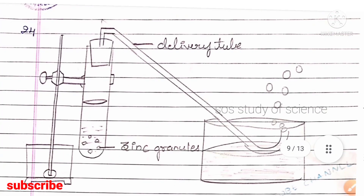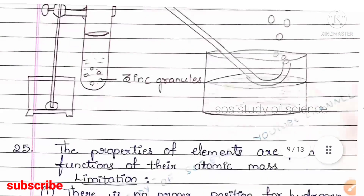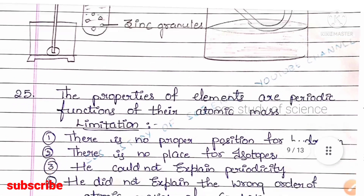Question 24: draw a neat labeled diagram of the reaction of zinc granules with dilute sulfuric acid. This is an expected question — you have to label the zinc granules and also the delivery tube.